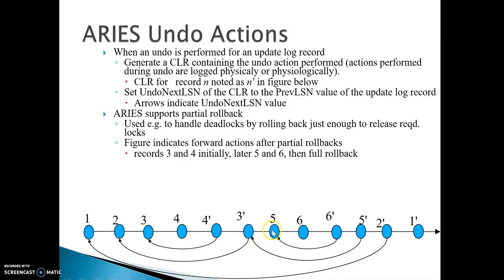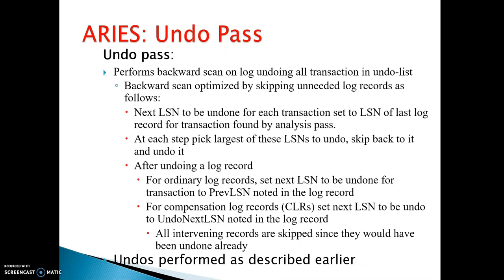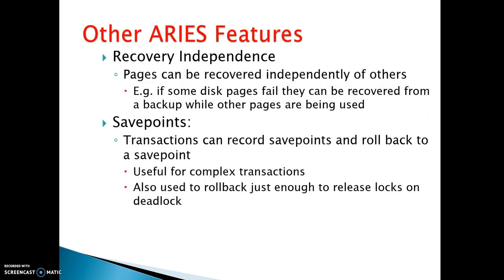Once the third action is completed, actions 5, 6, 7 follow, and when 6 is rolled back it proceeds as shown in the diagram. The undo pass performs a backward scan on the log, undoing all transactions in the undo list. The backward scan is optimized by skipping unneeded log records, going back to the last checkpoint. The next LSN to undo for each transaction is set to the LSN of the last log record for that transaction found by the analysis phase.